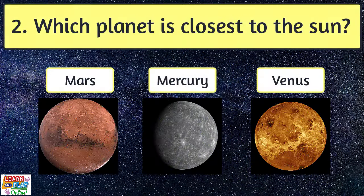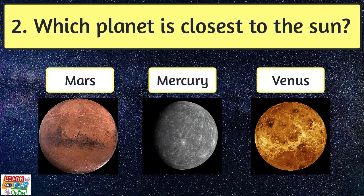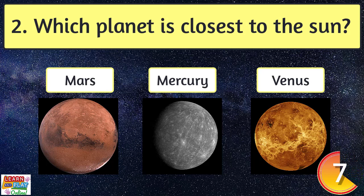Question 2. Which planet is closest to the Sun? Mercury.